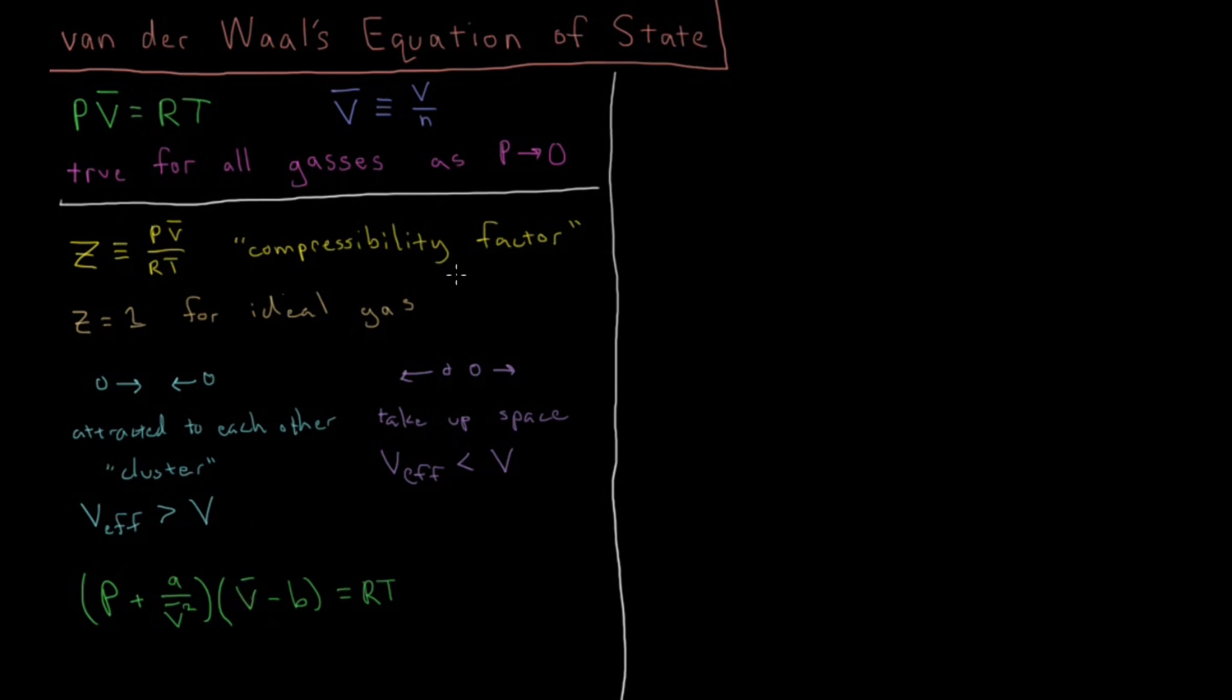So what are these two parameters here? Well, we have a, and that's a parameter which accounts for the attraction strength between molecules. How strongly are they attracted to each other at kind of medium range distances. You can remember that's a for attraction. And then you have the parameter b which is effectively the molecular size or the molecular volume. How much space does an individual gas molecule take up. And as you get to larger and larger molecular weights, you can imagine this b parameter will probably get larger and larger.